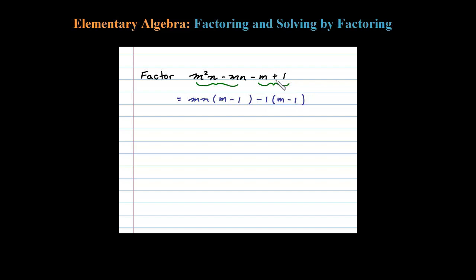Okay, so that was the trick. Now we're going to treat this as a binomial, something minus something. Now what do these two terms have in common? Certainly an M minus 1.